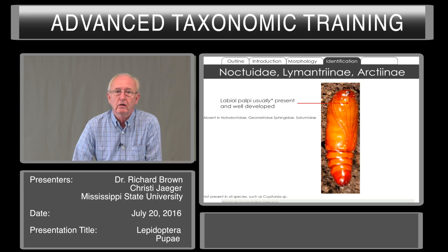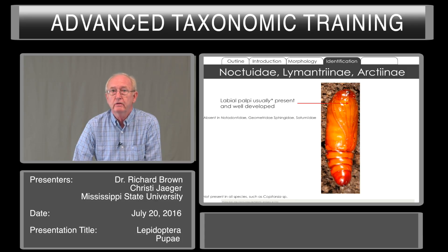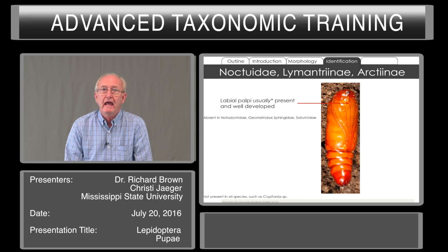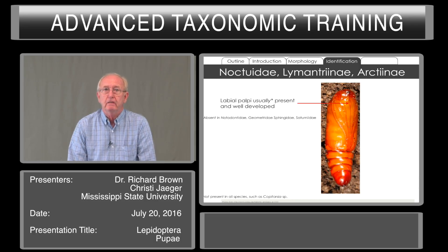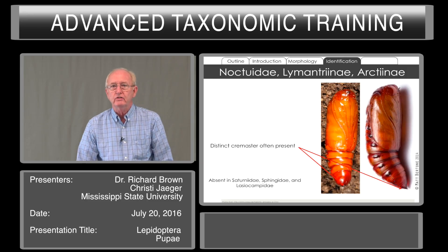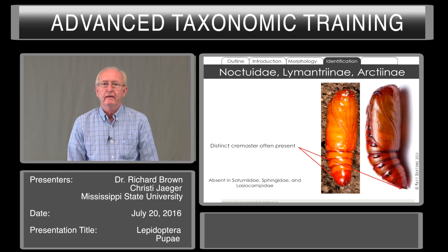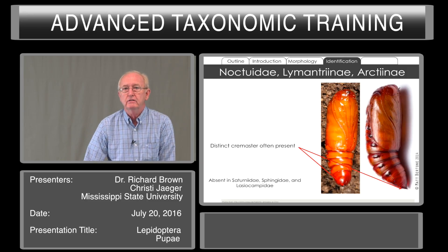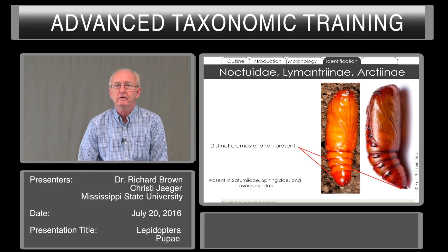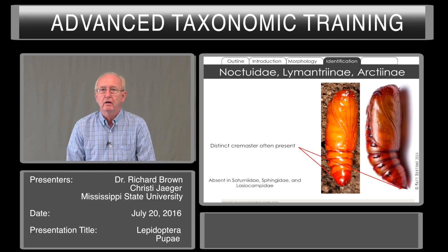Copitarsia is one of the genera that we look for, but most Noctuids have these exposed labial palpi. There's also a distinct cremaster — which is absent in Saturniaids, Sphingids, and Lasiocampids — a little hook-like process at the tail end.